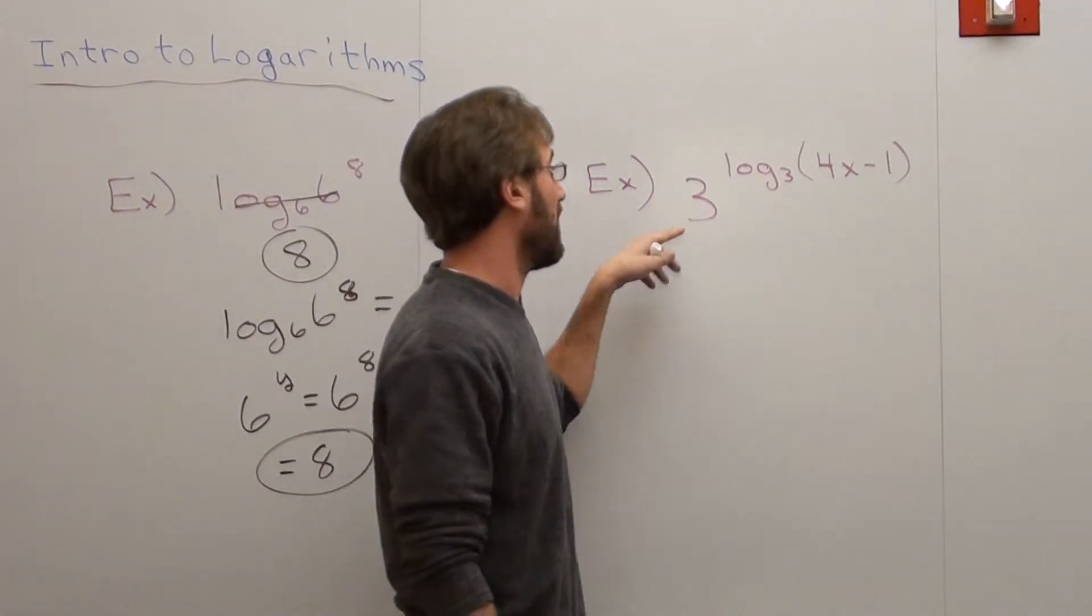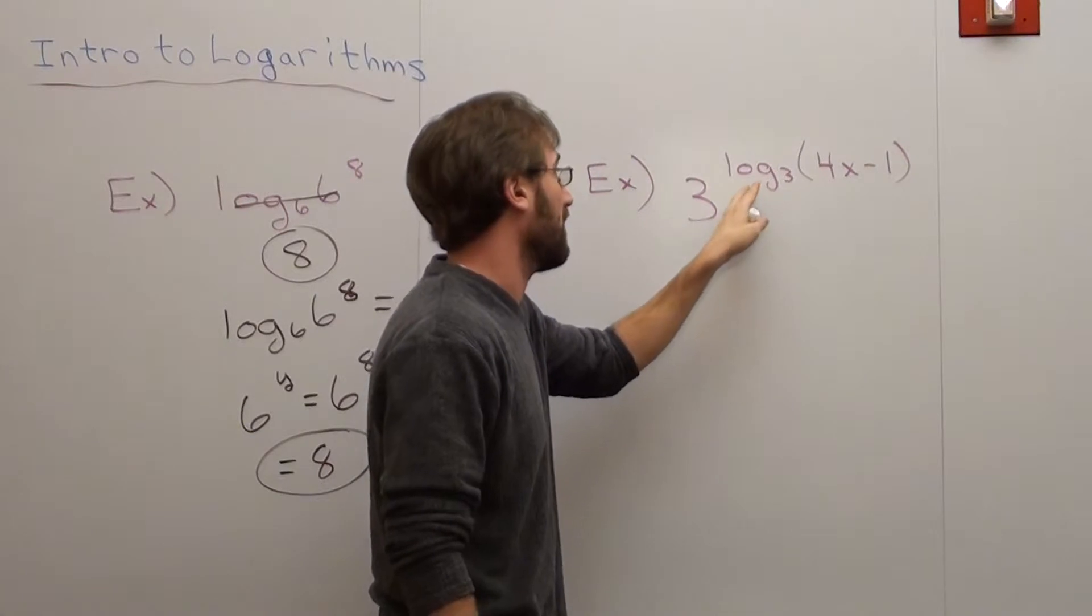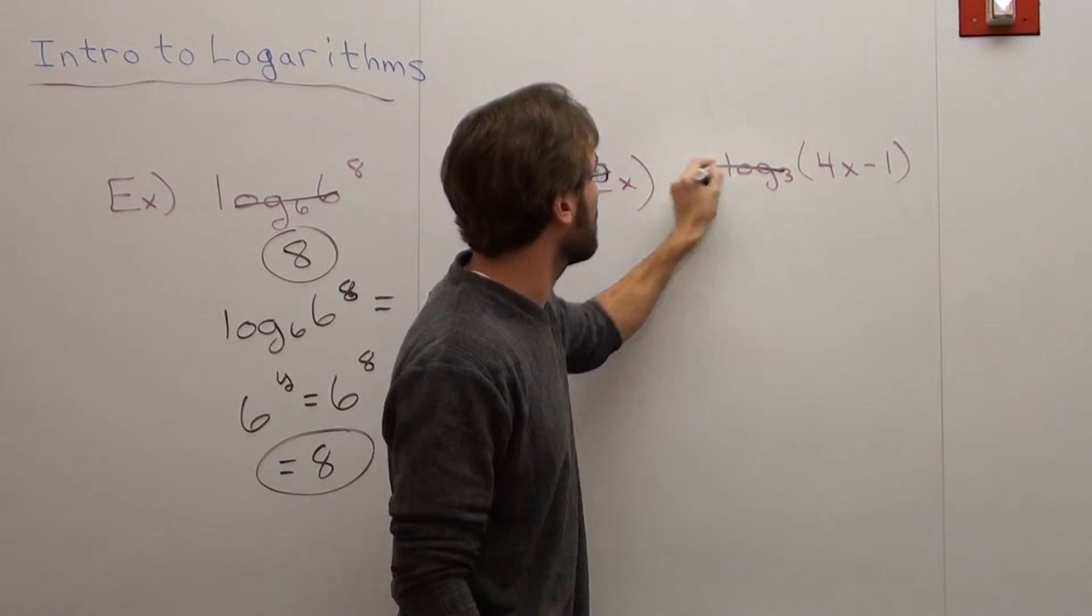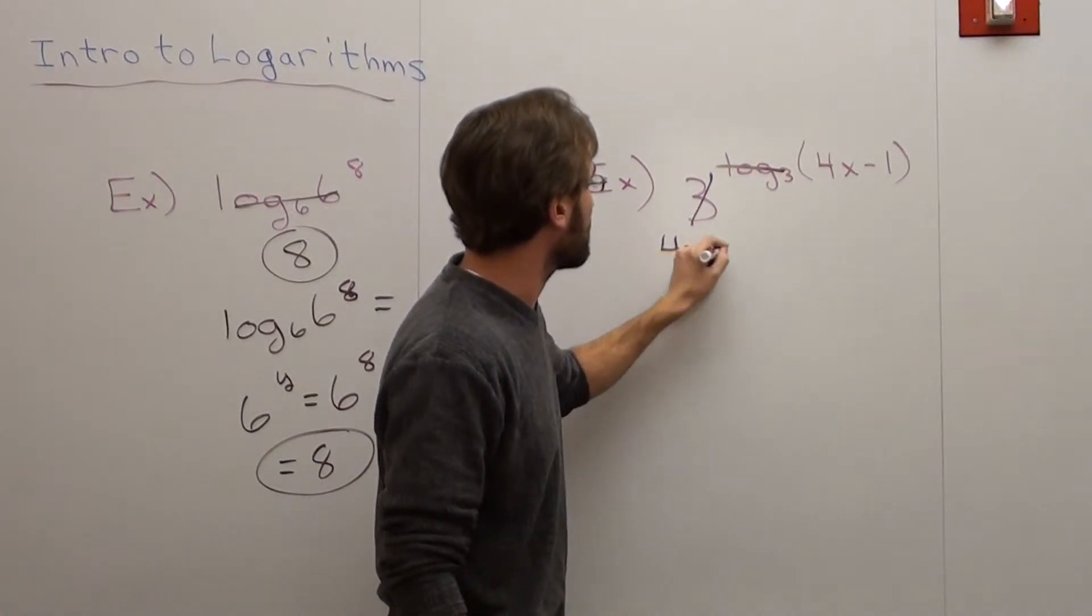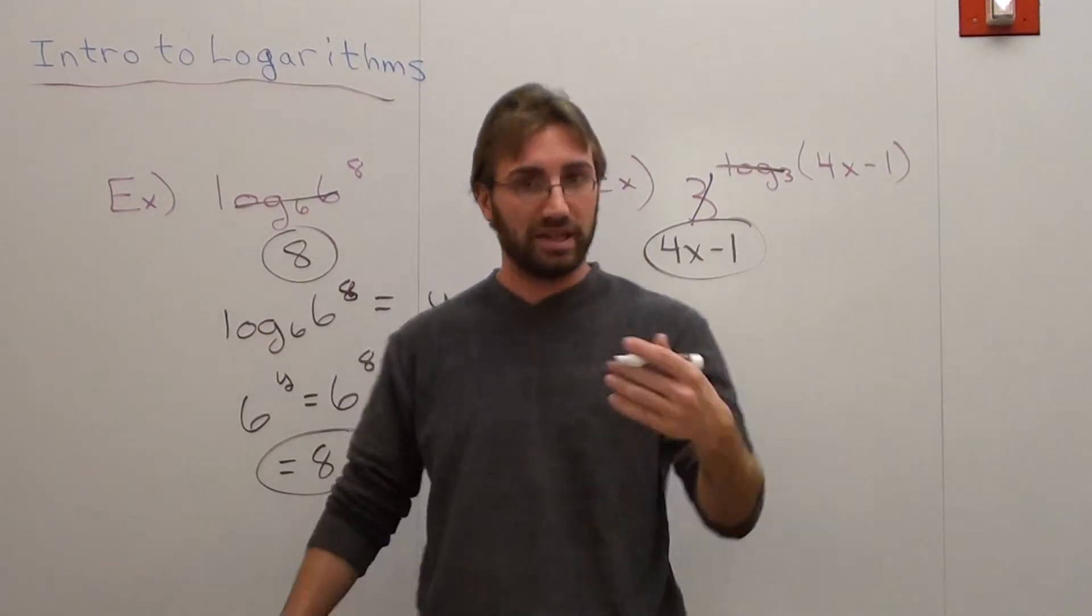Same thing here. If you have 3 to the log base 3, you cancel this out and you're left with 4x minus 1. Now, if you don't believe that's the case, I'll go ahead and rewrite it.